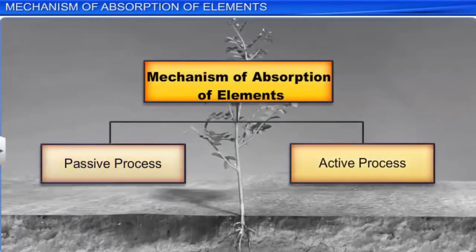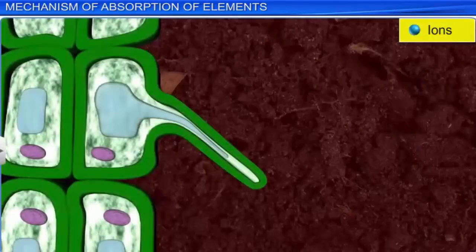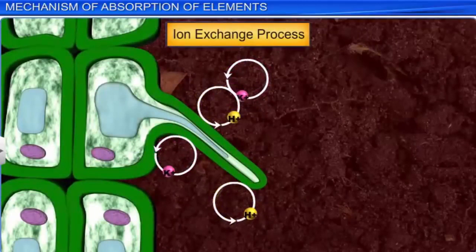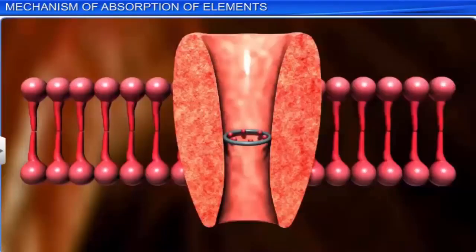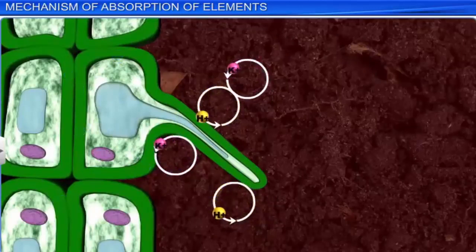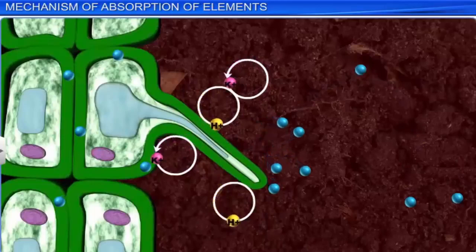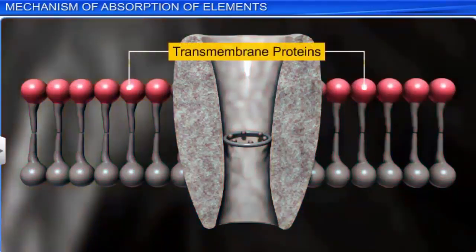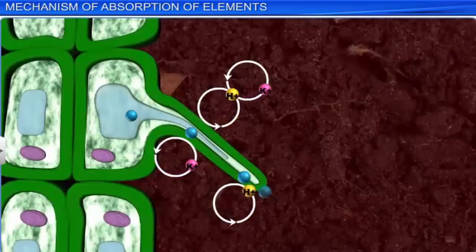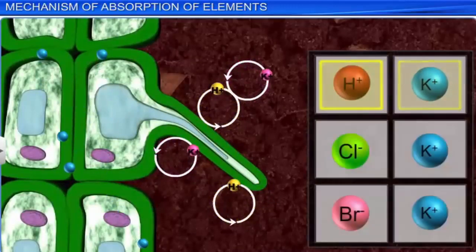The first phase involves the movement of elements into the cell wall and intercellular spaces. The absorption of ions happens through the ion exchange process. The passive movement of ions into the outer space of the plasma membrane usually occurs through ion channels. Cations and anions have the tendency to get absorbed into the root cell wall, and these ions get exchanged with the ions in the soil solution. The transmembrane proteins in the ion channel function as selective pores. For example, K+ can be exchanged with the H+ ions from the cell.